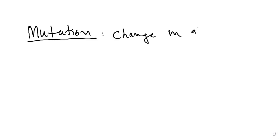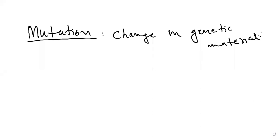What is mutation? If I simply define mutation: change in genetic material is called mutation. Hugo de Vries is a scientist who first used the term mutation. Mutation refers to a change in the genetic material.